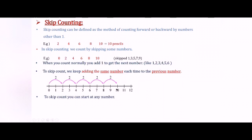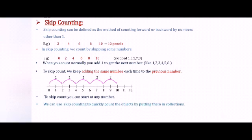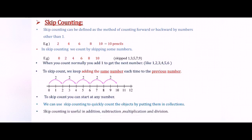To skip count you can start at any number. Children, it is not necessary you have to start from 0 only. You can start from any number like 1, 2, 3 — any number you can start skip counting. We can use skip counting to quickly count objects by putting them in collections. Skip counting is useful in addition, subtraction, multiplication and division.